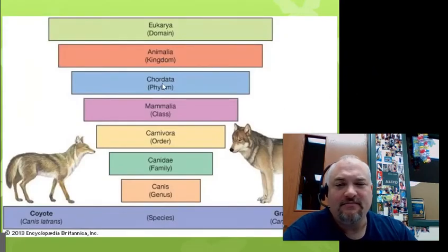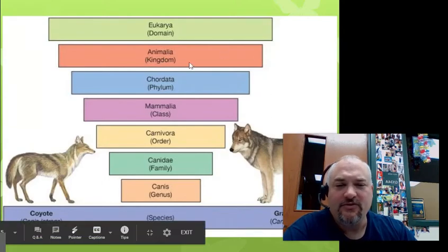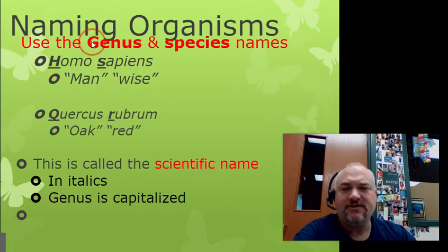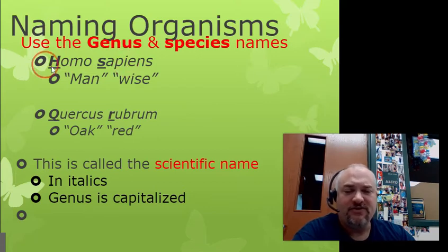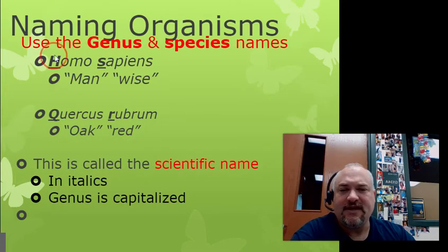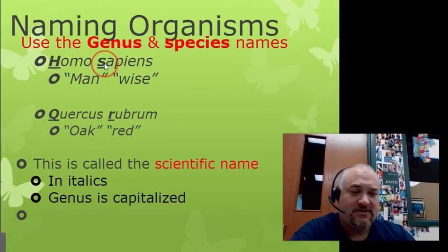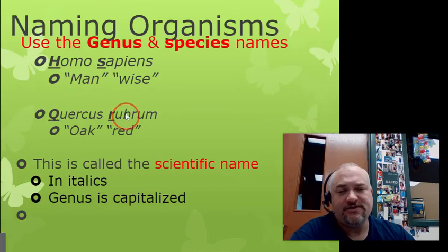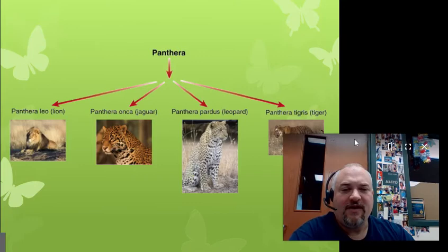You can see the animal kingdom breakdown — the wolf and the coyote belong to the same groups all the way down until you get to the species level. They have the same genus, so they're closely related, but they're not the same species. How do you name things? We always name them using their genus and species. We are genus Homo, species sapiens, so our full scientific name is Homo sapiens, which literally means 'man wise.' Something to notice: the scientific name is written in italics, the genus is always capitalized, and the species is always lowercase. For example, the red oak is Quercus rubrum.